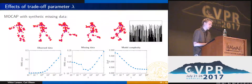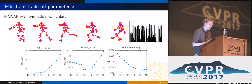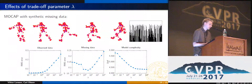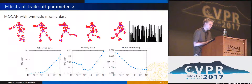As a sanity check for our optimization, we examined the effects of the trade-off parameter lambda. We took sequences from the CMU motion capture dataset and generated synthetic missing data patterns simulating tracking failure, randomly dropping each trajectory after some frame. The lower left graph shows the error on observed data as we change lambda — a higher lambda means a larger penalty on model complexity. The right shows the degrees of freedom of the resulting factorization, and the center graph shows the error on the missing entries. We see that when we have a good trade-off between model complexity and model fit, we get the best reconstruction.